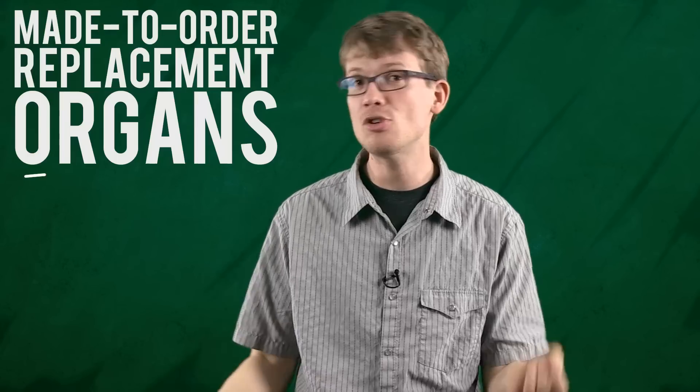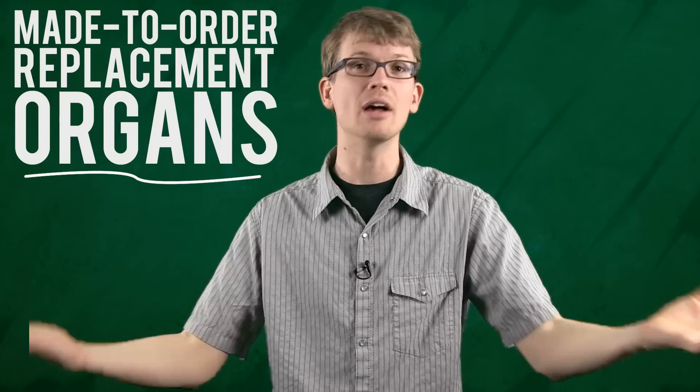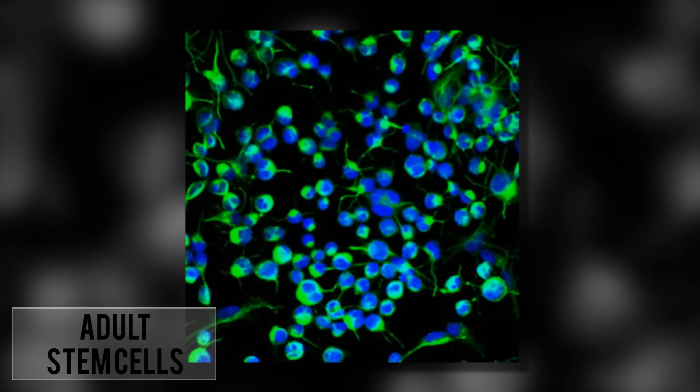Today, if you need a kidney or a heart, you have to wait until somebody else's becomes available. And then once you get one, there's a lot that could go wrong. Your body, for instance, could reject the new organ altogether. But 3D printers might soon be able to manufacture made-to-order replacement organs, customized for each person from a mixture of embryonic stem cells and the patient's own adult stem cells.